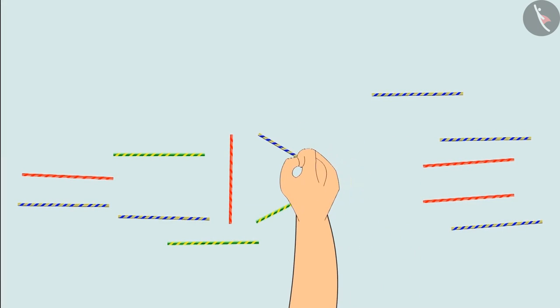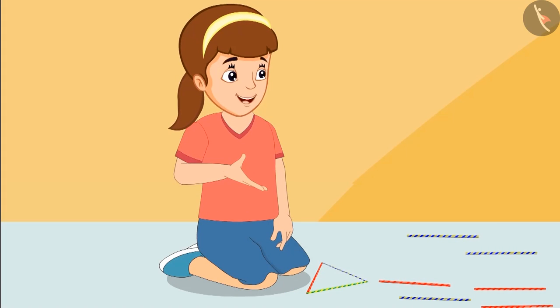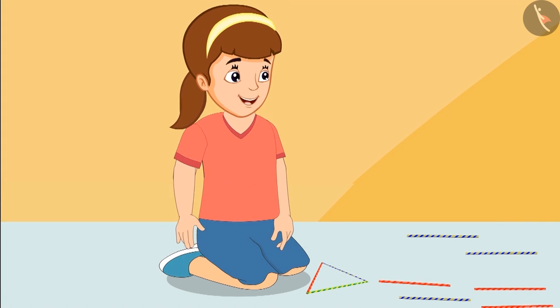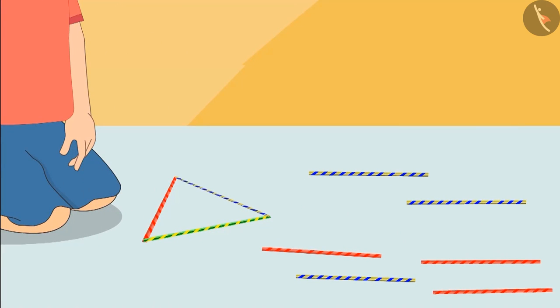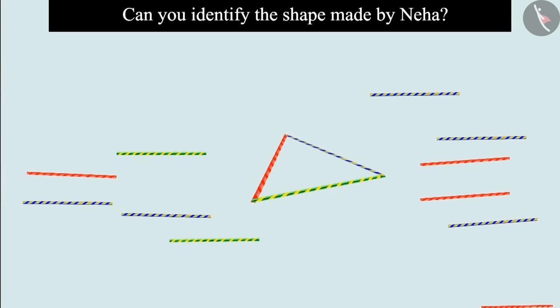Neha, what are you making? Chotu, I have made a shape out of three straws. Can you identify the shape I made? Children, do you know which shape Neha has made? Come on, let's see.